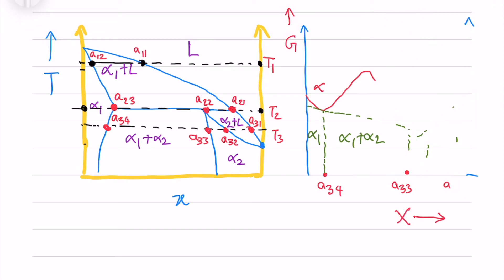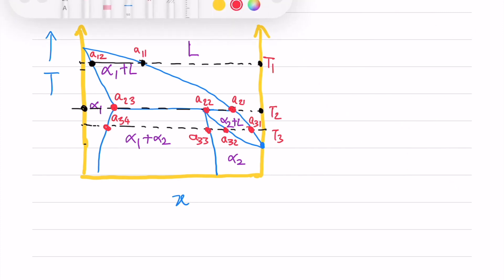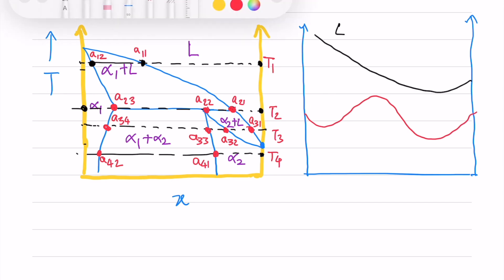Now there is another temperature tie line at T4, which has two compositions A41 and A42. For this, only alpha 1 and alpha 2 are at equilibrium. The liquid curve goes above the alpha curve, and I take a common tangent for the alpha curve to get the equilibrium states.